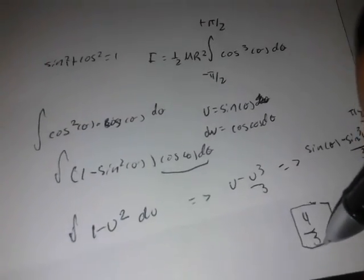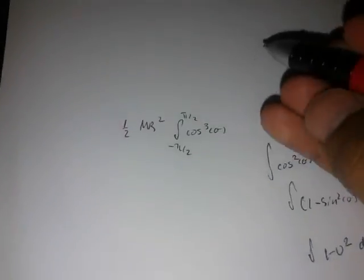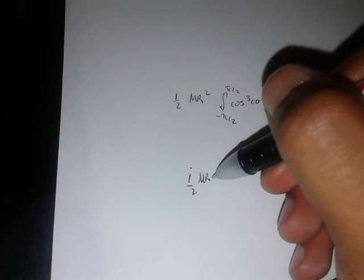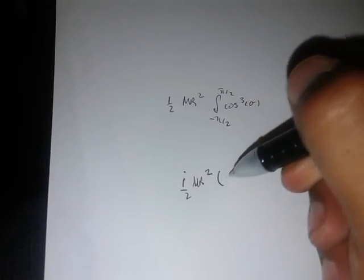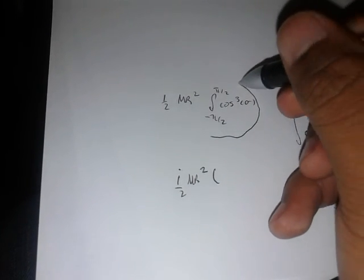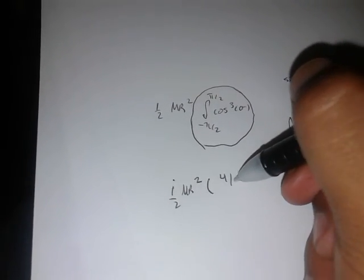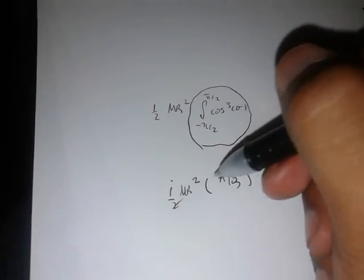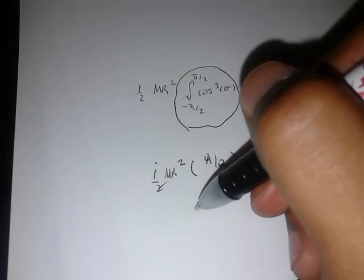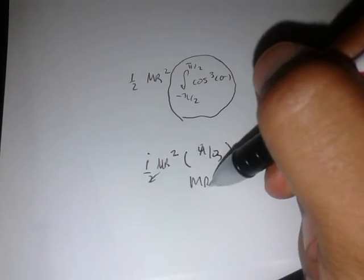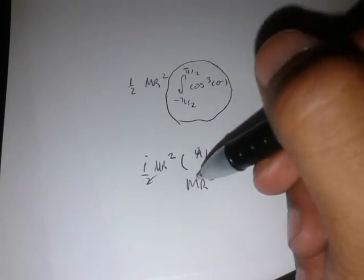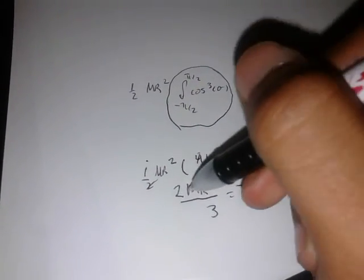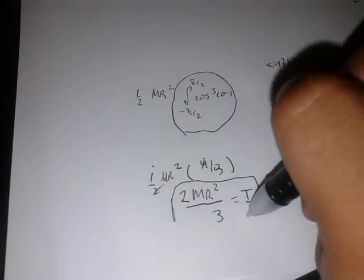Bringing everything together: I = (1/2) M R² × (4/3). The 4 and 2 cancel to give 2, so our final result is I = (2/3) M R². That is the moment of inertia of a hollow sphere.